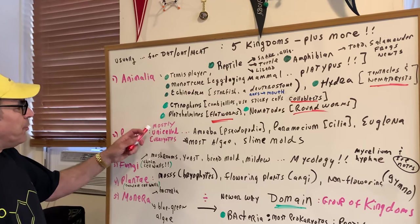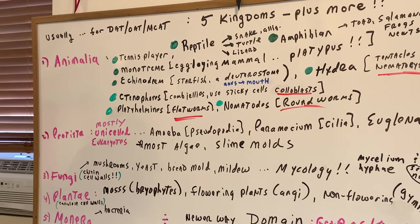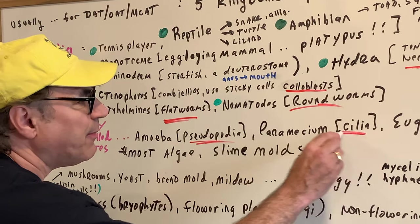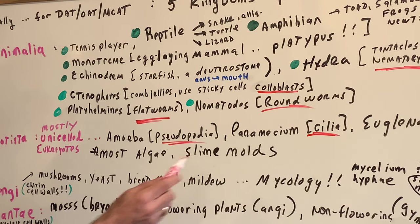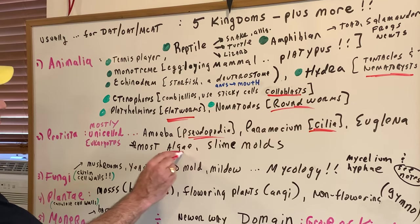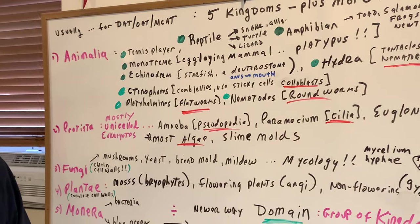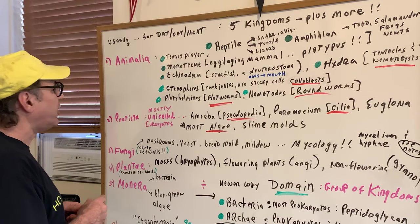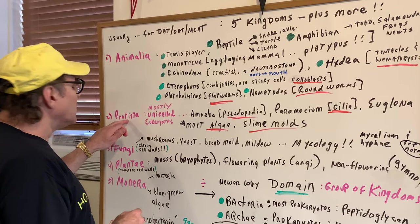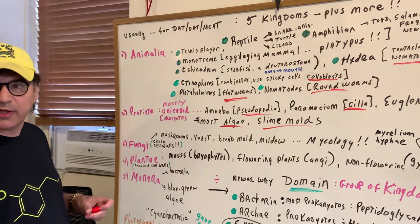How about Protista? These are mostly unicellular eukaryotes, with a few exceptions. They include the amoeba — if you remember, they had pseudopodia. Paramecium had cilia. The euglena had flagella. Most algae are considered protists — be very careful of that question. Slime molds, like myxomycetes, are also under Protista, in contrast to regular bread mold. So a slime mold would be under Protista — that's a little tricky.